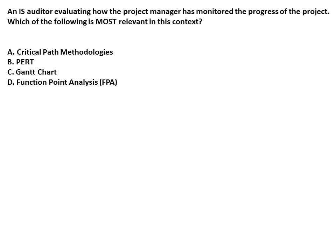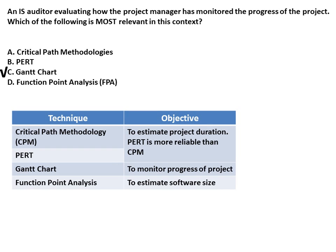Practice question: An IS auditor is evaluating how the project manager has monitored the progress of the project. Which of the following is most relevant in this context? Since the objective is monitoring the progress of the project, the answer should be Gantt chart. Recap: CPM and PERT estimate project duration; Gantt chart monitors project progress; Function Point Analysis estimates software size.